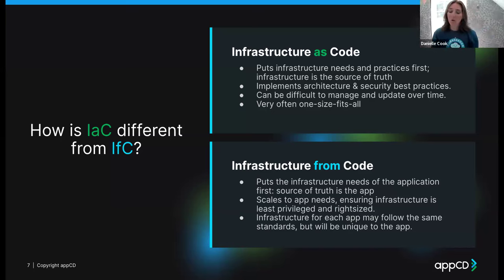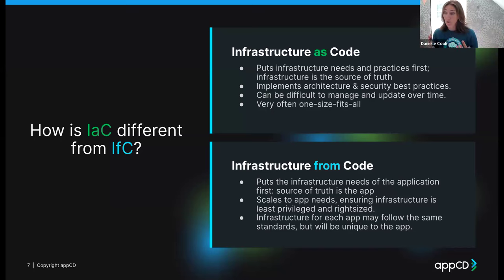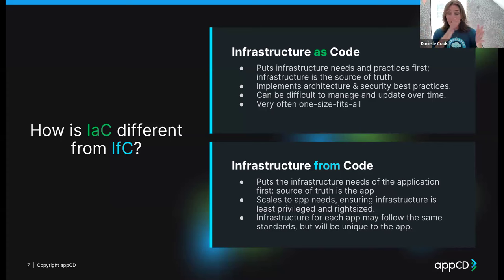To dive a little deeper on templates: platform teams are adopting them widely, but templates go out of date — and they can go out of date very fast. Because of the copy-and-paste nature — this worked last time — when you're using templates for infrastructure as code, you're going to have security issues. Infrastructure from code provides that security layer because every single time you deploy or ship your code, you are evaluating what security standards need to be in place now.